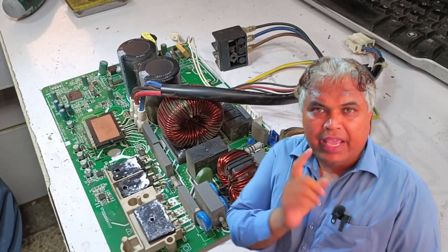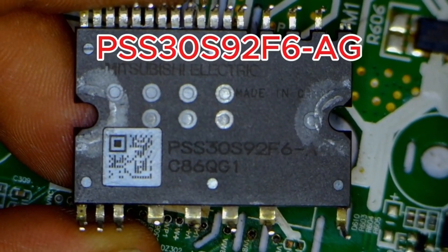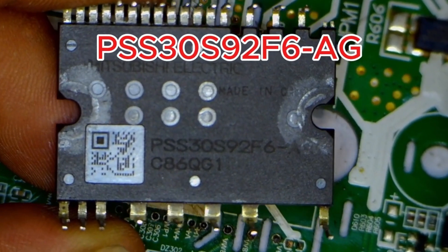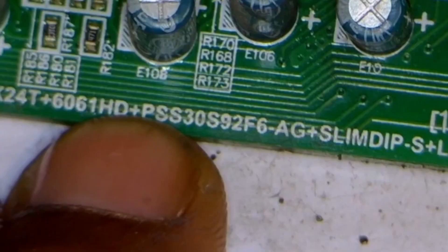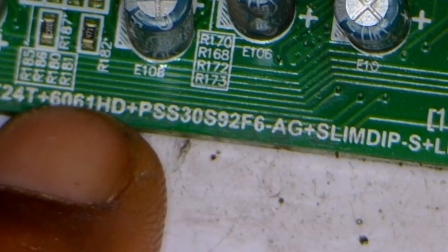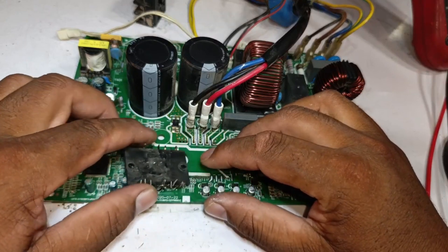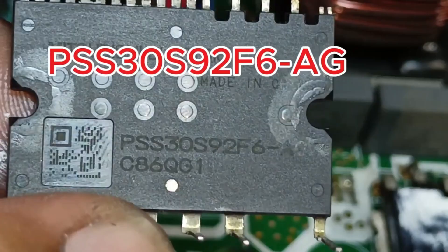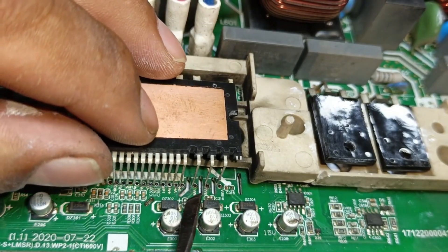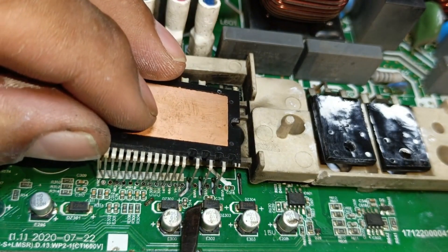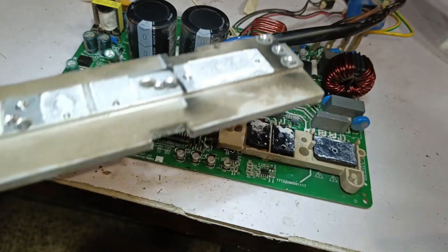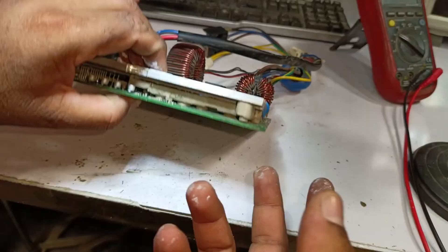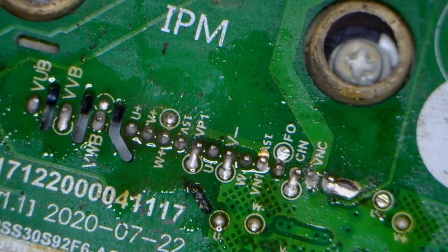Now we are installing the new IPM intelligent power module, and its original number is PSS30S92F6-AG. If you look closely, the PCB number is also written on it, showing its original number. The original IPM that was removed had its number erased, but the new one has the correct marking. We will install the IPM properly, ensuring that each pin is carefully placed. Now the IPM is in place, and we've attached its base plate on top. All screws are tightened, and the IPM is soldered.